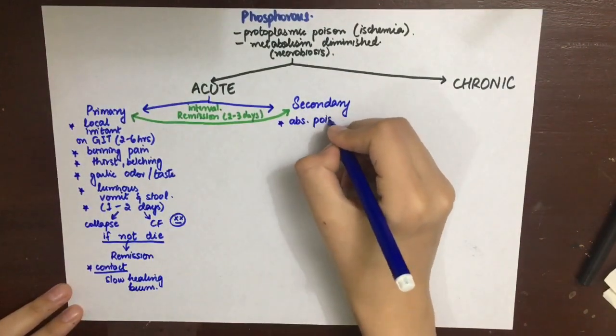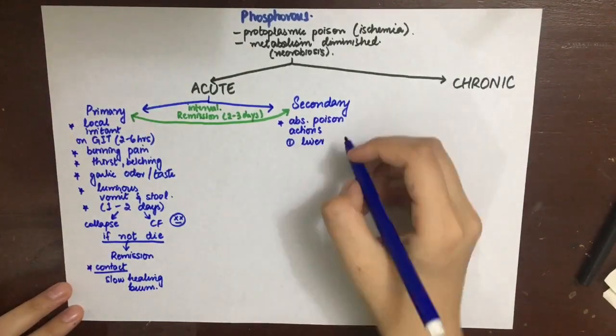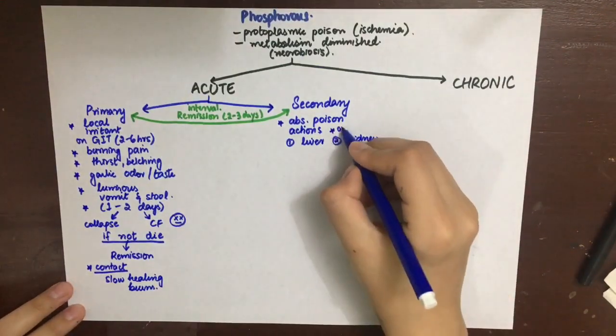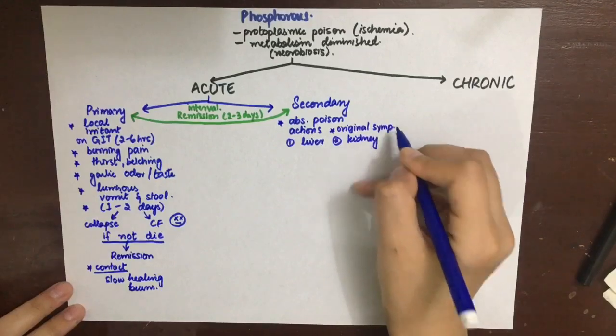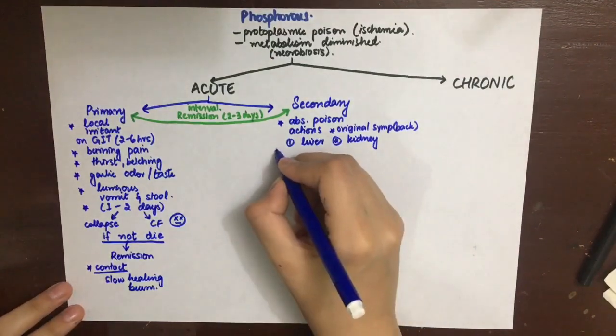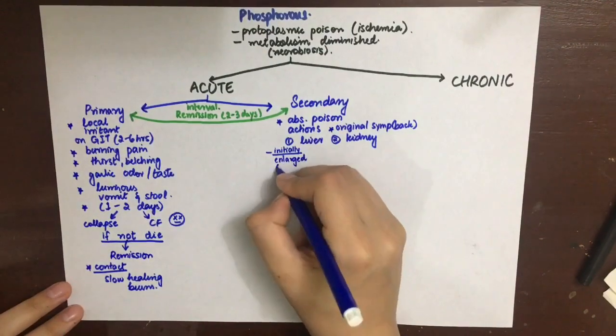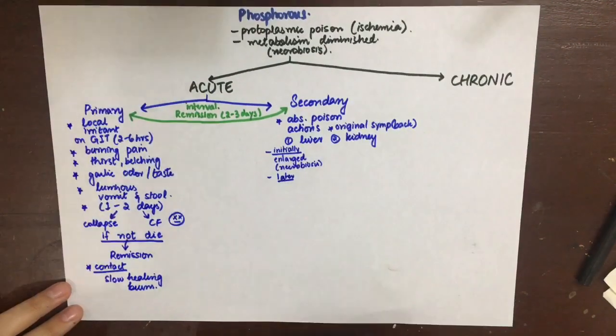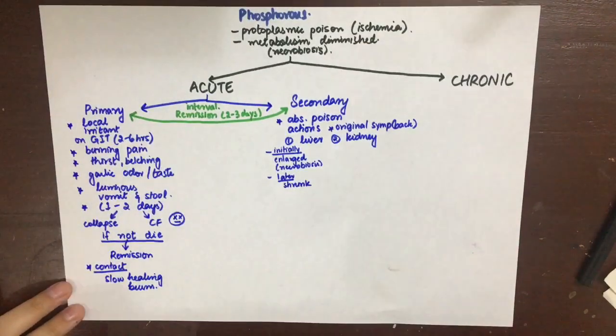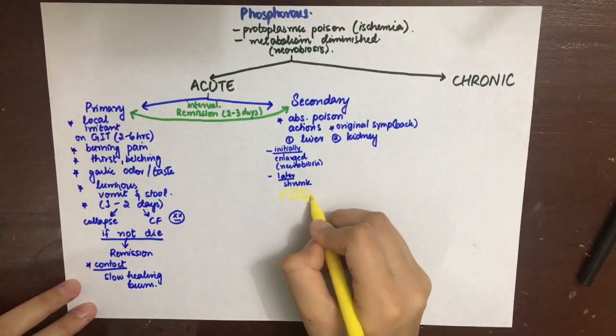After the remission period of two to three days, there are secondary symptoms. Secondary acute phosphorus poisoning is mainly due to the absorbed poison and its actions. The main actions are on the liver and kidney, and the original symptoms return as well. Initially the liver shows enlargement and fatty degeneration called necrobiosis. The abdomen is enlarged due to liver necrosis, and then later the liver shrinks in size, a condition called acute yellow atrophy of the liver.